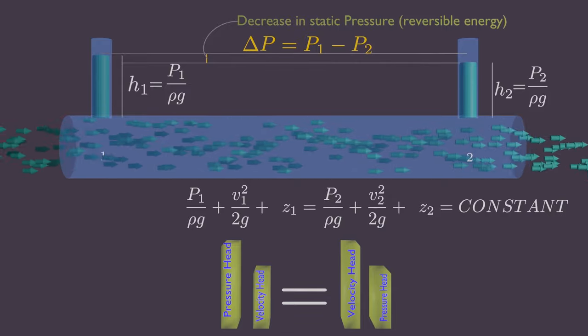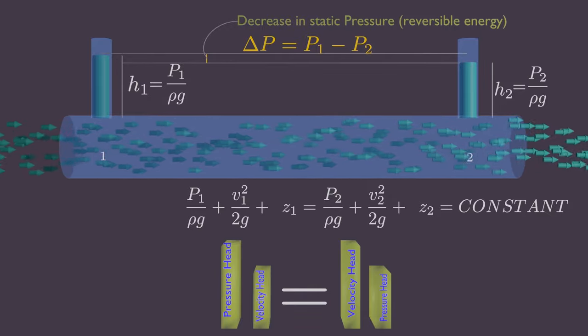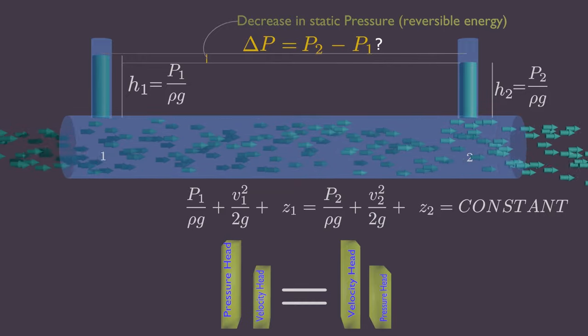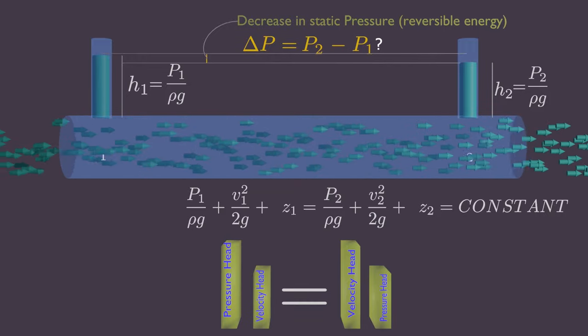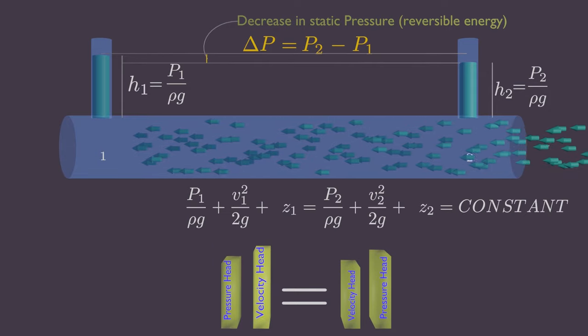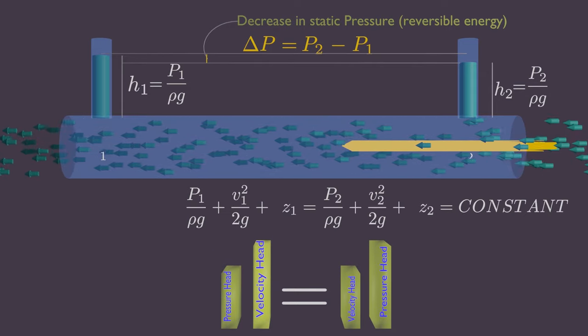Now, do you know what might happen if pressure at point 2 is greater than pressure at point 1? Of course! The fluid particle will travel from right to left direction.